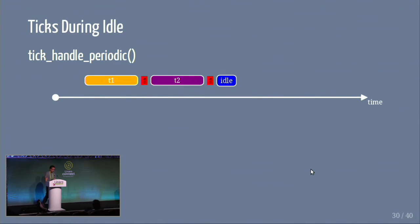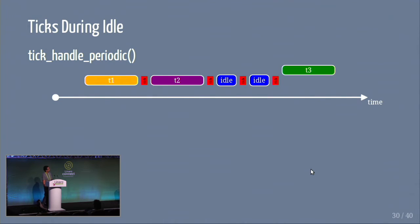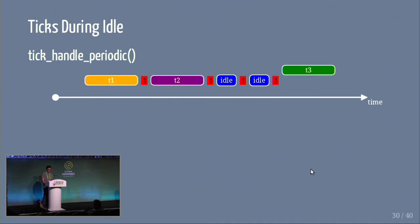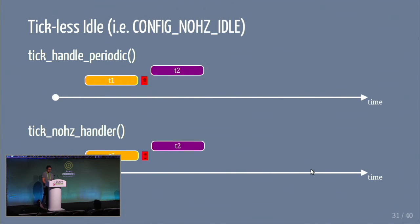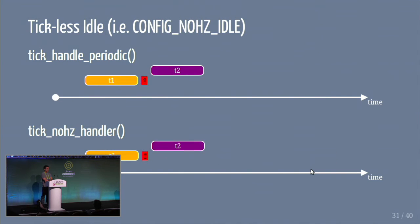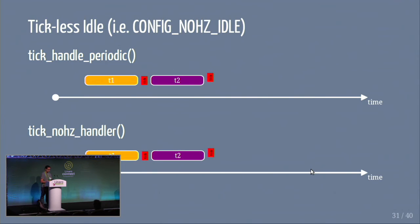In periodic mode, you have an interrupt running the tick every CONFIG_HZ cycle, and the event handler is tick_handle_periodic. A task may run, then the tick fires, then idle may happen, then the tick fires again — this just continues. If we have CONFIG_NO_HZ_IDLE and we're using the tick no-hertz handler, then idle can actually go for longer than one tick without being interrupted. The idle and no-hertz handler can go the entire length.